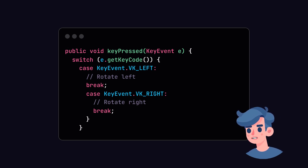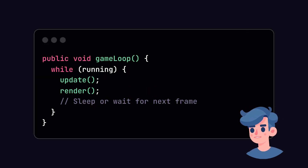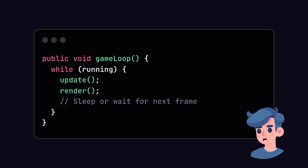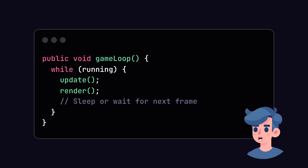Using the KeyListener interface, keyboard controls add an entirely new dimension to your game. Next, we'll implement a simple game loop. A game loop runs continuously and allows us to update the game state and render the graphics — here's a basic implementation of our game loop.